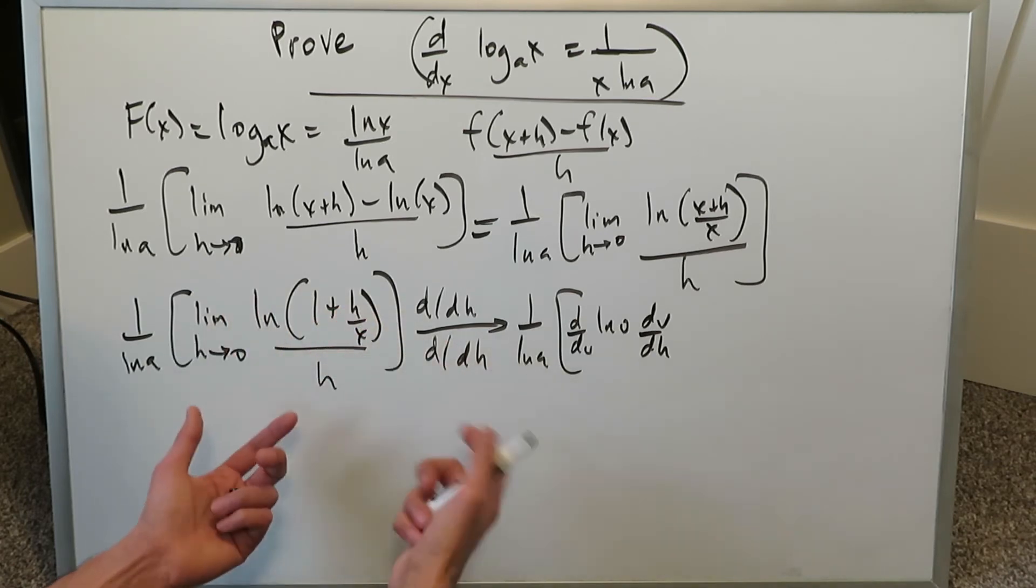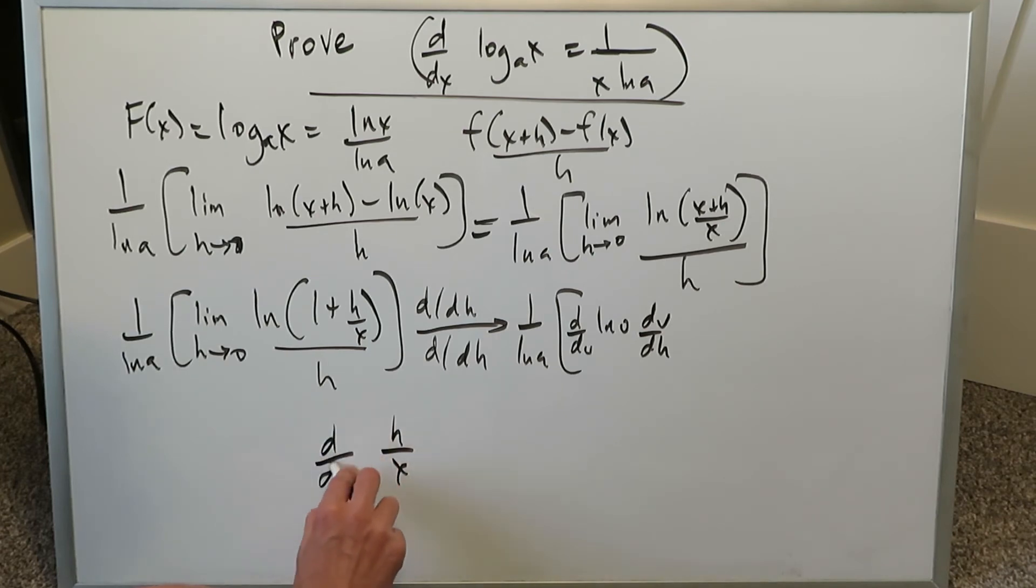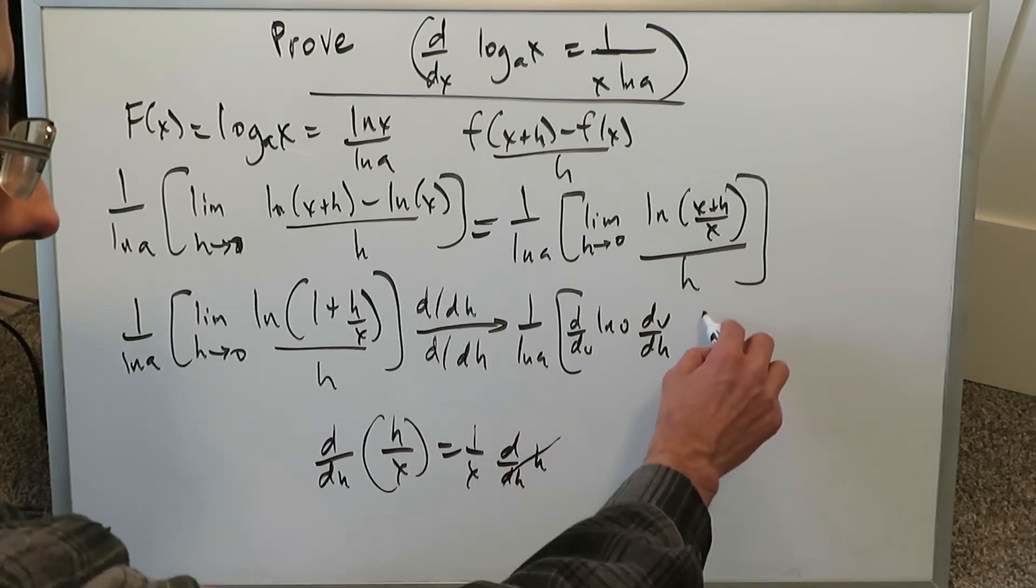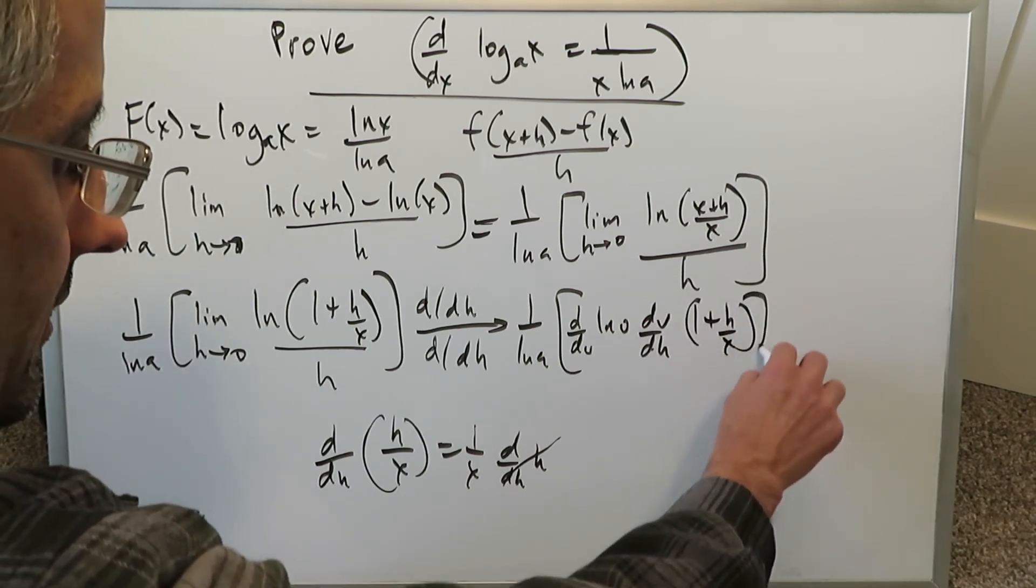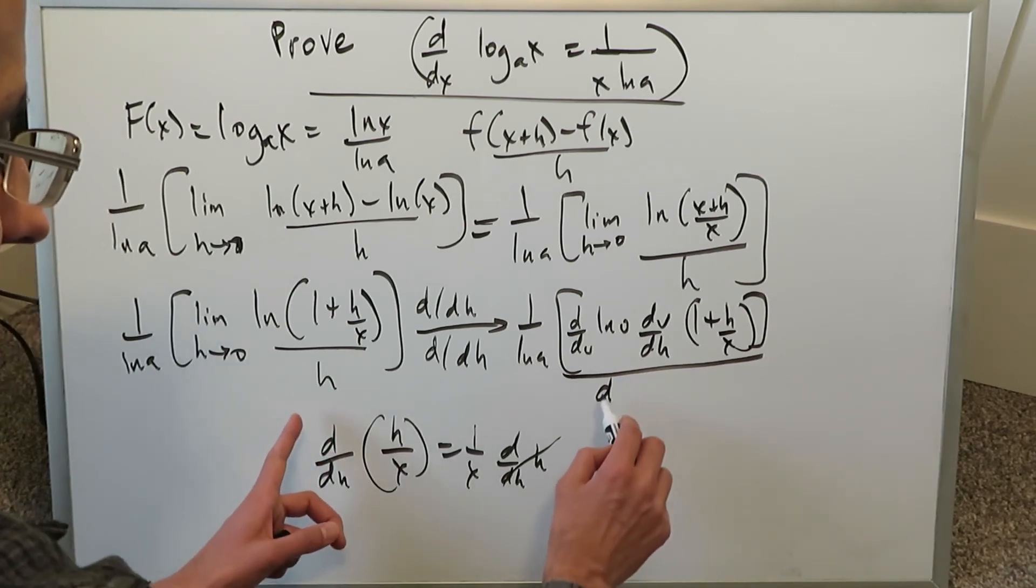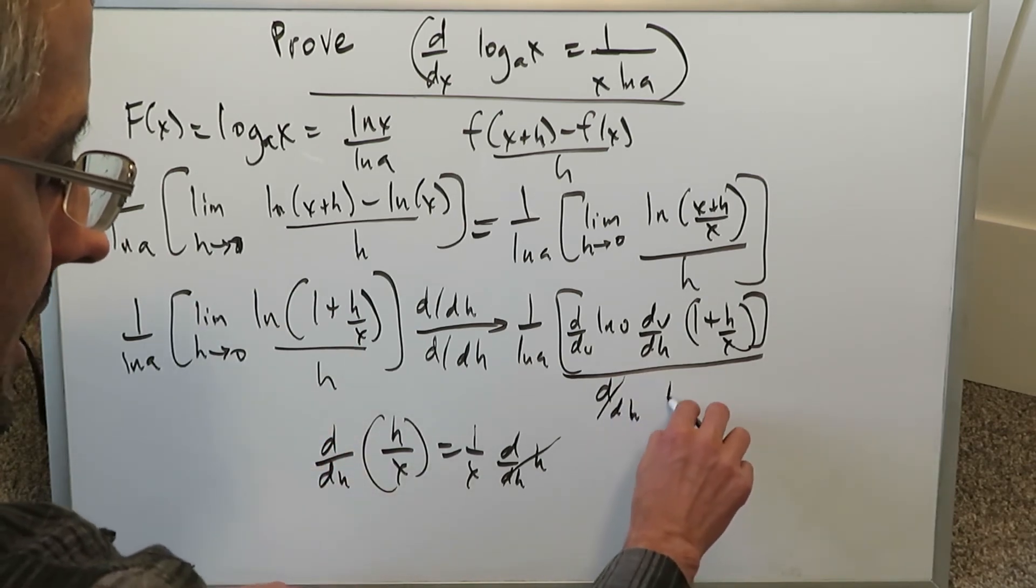The derivative of 1 plus h over x, 1 is a 0. h over x is just 1 over x. If you're doing the derivative of h over x with respect to h, it's really you looking at 1 over x times the derivative of h, which goes away and you're left with 1 over x. So you have to bring that into mind when you actually do that. Over the derivative of this h, d over dh h.